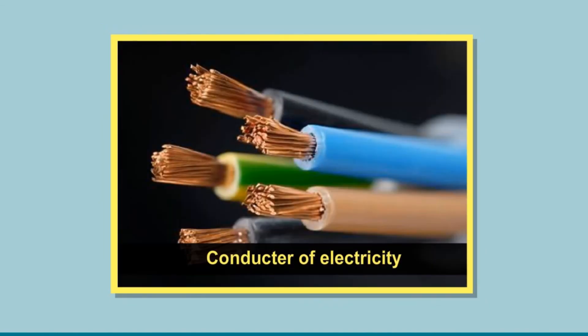Does all matter allow electric current to pass through them? So far, we have created circuits in which we have used cells with metal containers and wires. These materials allow the current to pass through them. Such materials are called conductors. All metals are conductors. Apart from these, graphite is a form of carbon which is a conductor.